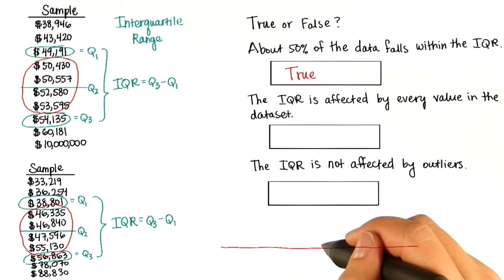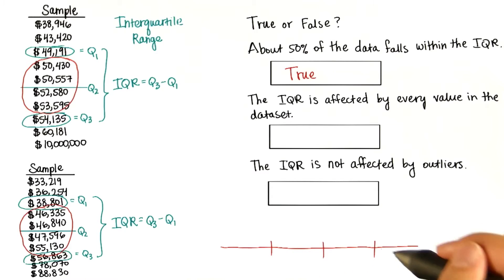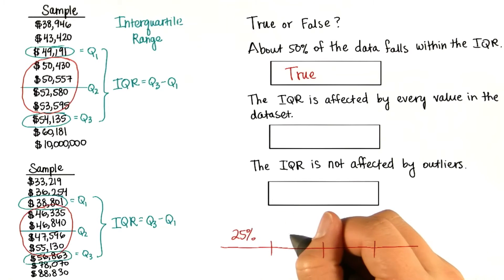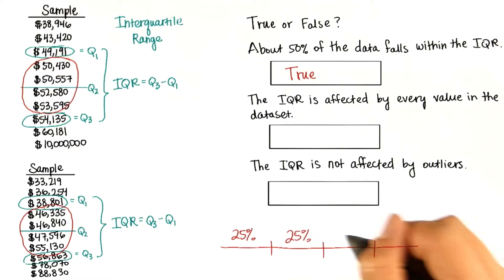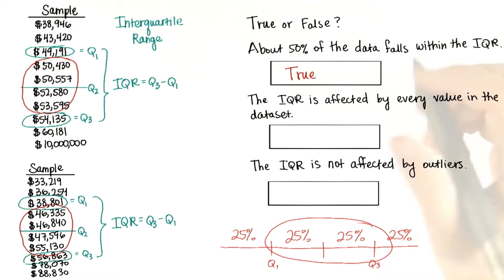Think of it this way. We split the data in half, we split it in half, and we split it in half here. If this is 25%, this is another 25%, another 25%, and another. Then here between Q1 and Q3, we'll have about 50%. This one's false.